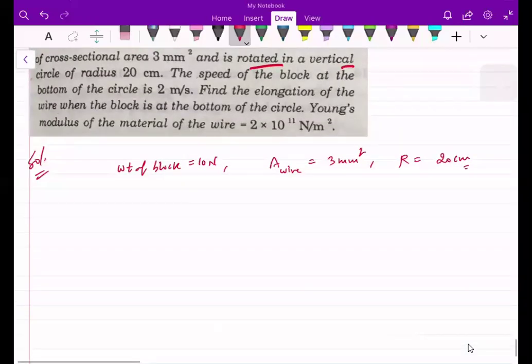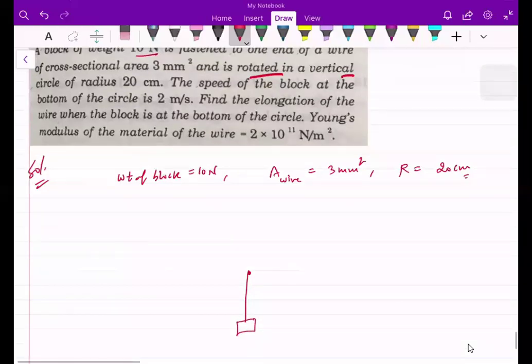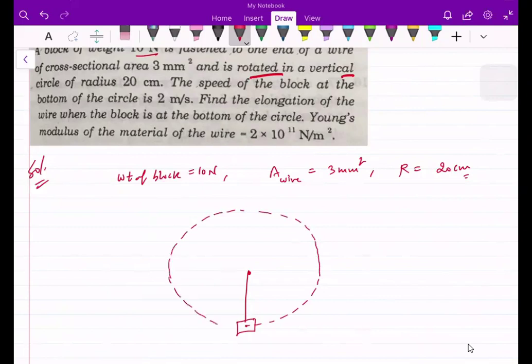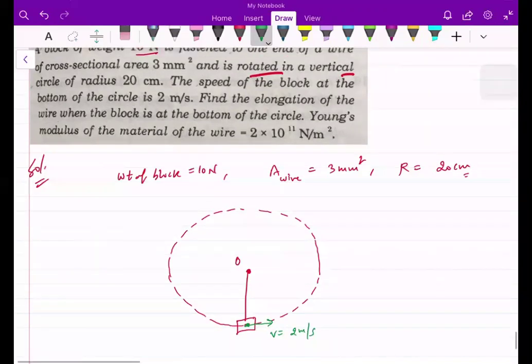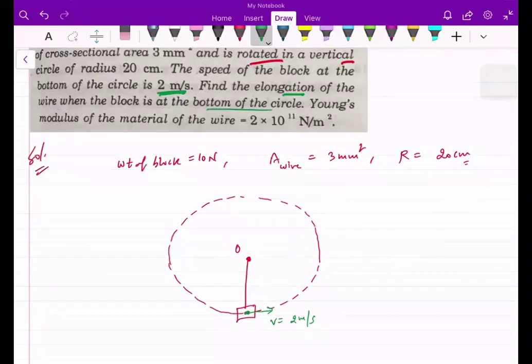Something happens here. We have a block at the end of the wire and then we have rotation in a vertical circle. The speed of the block at the bottom is 2 meter per second. This will be the tangential speed. Find the elongation of the wire when the block is at the bottom of the circle.